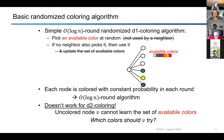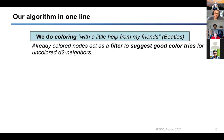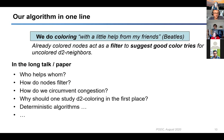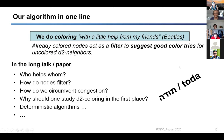The key challenge is: which colors should an uncolored node try, since it cannot learn its set of available colors? To summarize in one line: we do coloring with the help of friends. Already-colored nodes try to help uncolored ones get colored, acting as a filter to suggest good color tries for uncolored neighbors. In the longer talk and the paper, you can find more about who helps whom, how nodes filter, and how we get around congestion.